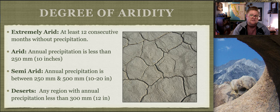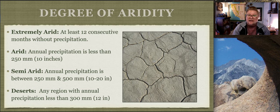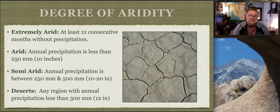Arctic regions can technically be classified as a desert region because they're very arid - very dry, just cold. Deserts can be hot, absolutely, and cold at night, but they're always dry.